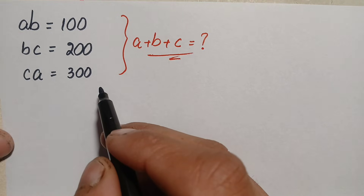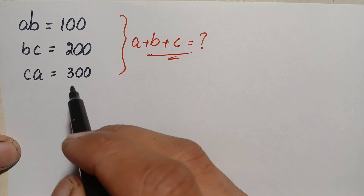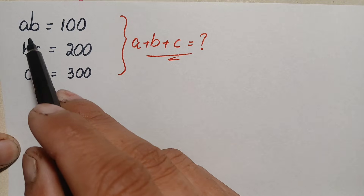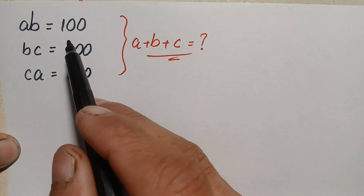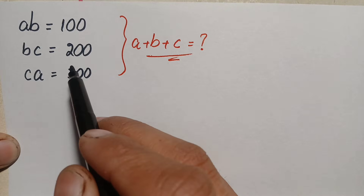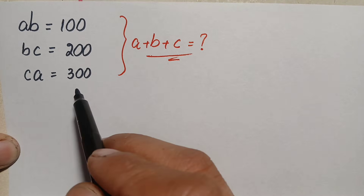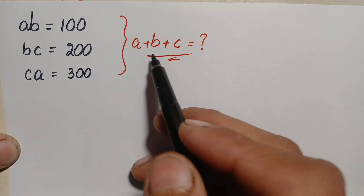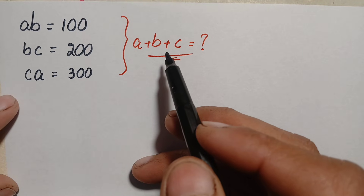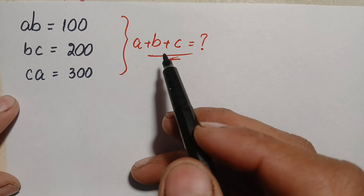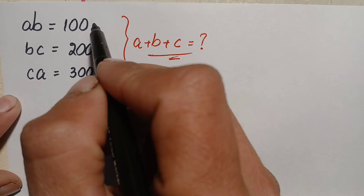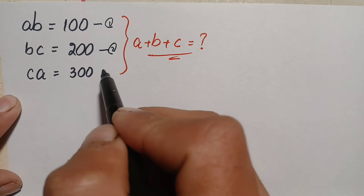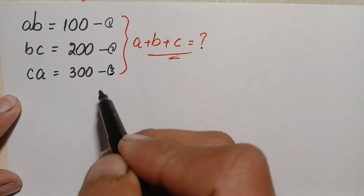Hello everyone, welcome. How to solve this interesting algebra math problem: a times b is equal to 100, b times c is equal to 200, c times a is equal to 300. We will find the value of a plus b plus c. Let us label these as equation number one, equation number two, and equation number three.